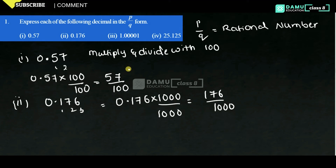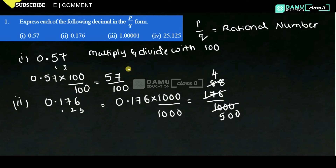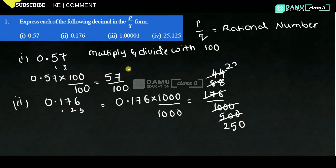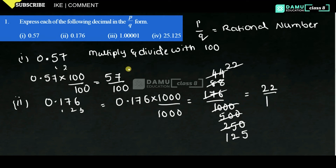Then, multiply and divide with 2. Dividing both 176 and 1000 by 2, step by step through the division, what you will get is 22 by 125. So, 22 by 125 is the answer.